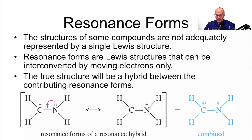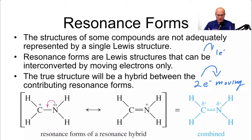Let's talk about arrows for a minute. When you have a double-headed arrow like this, it means two electrons are moving. If you have an arrow like this — they're called fish hook arrows — one electron is moving. So there are double-headed arrows and single-headed arrows: a double-headed arrow moves two electrons, a single-headed or fish hook arrow moves one electron.